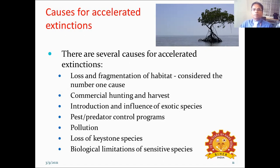Pest predator control programs also accelerate extinctions. Pollution is another cause — when the atmosphere of an ecosystem or geographic region is polluted, species are not able to survive because they cannot tolerate the atmospheric pollution. Loss of keystone species is also a cause: when keystone species are lost, the species which depend on them are also lost, and extinction occurs.